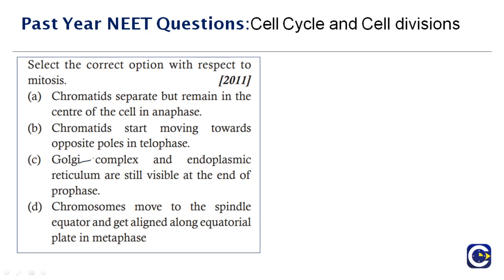Question from 2011: 'Select the correct option with respect to mitosis.' Option A — 'chromatids separate but remain in the center of the cell in anaphase' — is wrong. A chromatid is a newly copied chromosome still joined to the original by a single centromere; after replication, each chromatid contains one DNA molecule.